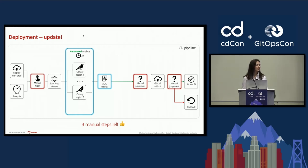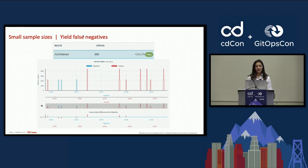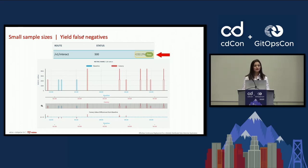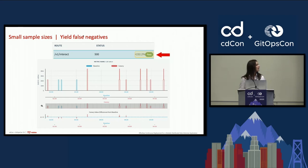There are cases when a release engineer might want to continue with a release despite an automatic canary analysis failure, such as when performance improvements have been achieved. But false negatives are particularly risky because they hide negative impact that is only visible after the global rollout. For example, an analysis may find no difference between baseline and canary because there are very few non-zero data points for a specific metric, resulting in a sample size too small for the statistical test to confidently detect a real effect. This is a clear example that such metrics do not yield reliable results, whether false positives or false negatives.